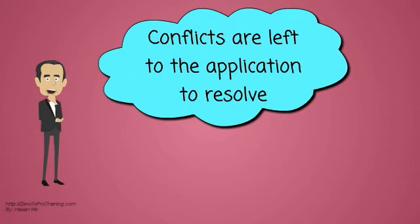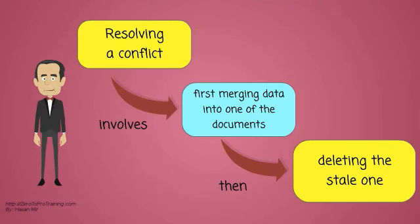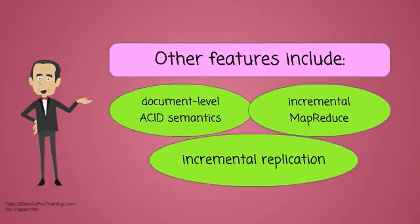Conflicts are left to the application to resolve. Resolving a conflict generally involves first merging data into one of the documents, then deleting the stale one. Other features include document-level ACID semantics with eventual consistency, incremental MapReduce, and incremental replication.